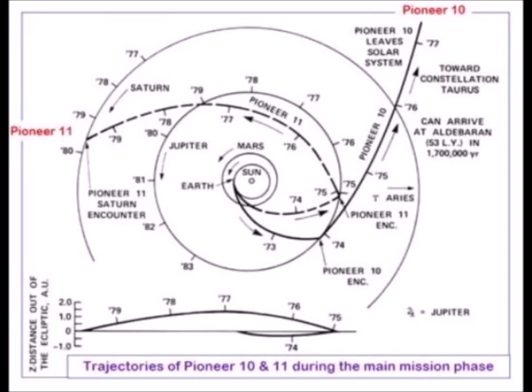Pioneer 10 moves at a speed of approximately 12 kilometers per second. The anomaly of the trajectories of the Pioneer 10 and Pioneer 11 space probes also presents cyclical variations.